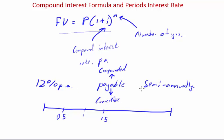12% payable semi-annually is essentially the same thing as 12% compounded semi-annually and 12% convertible semi-annually. These words are interchangeable. Just something to note.